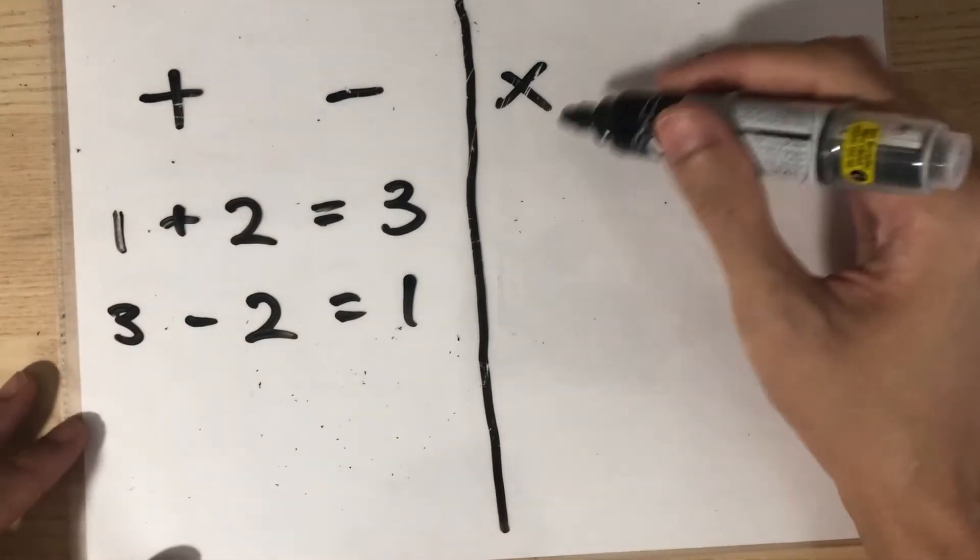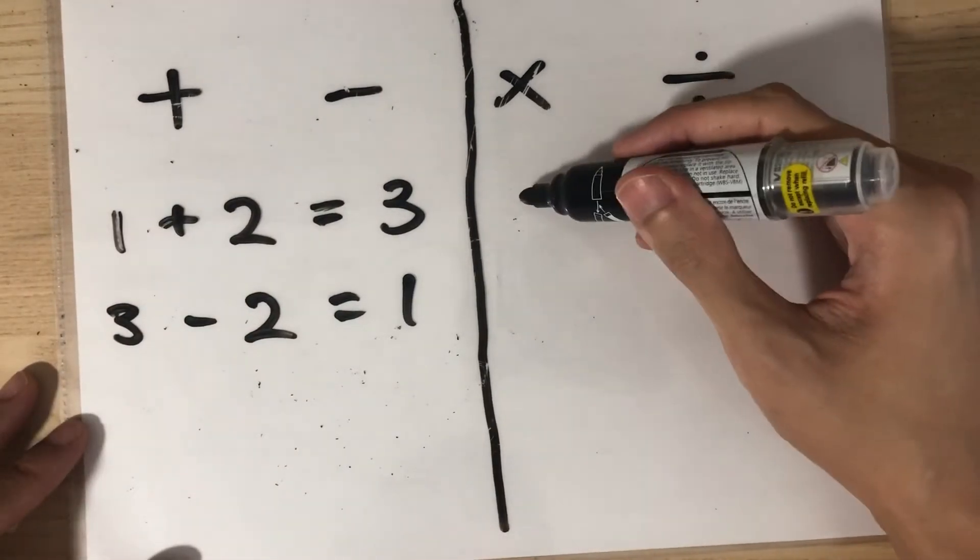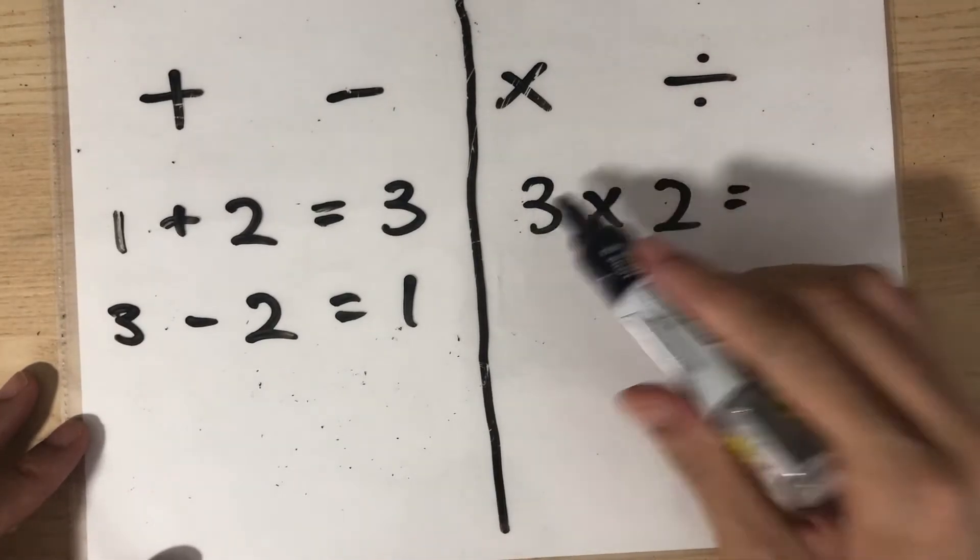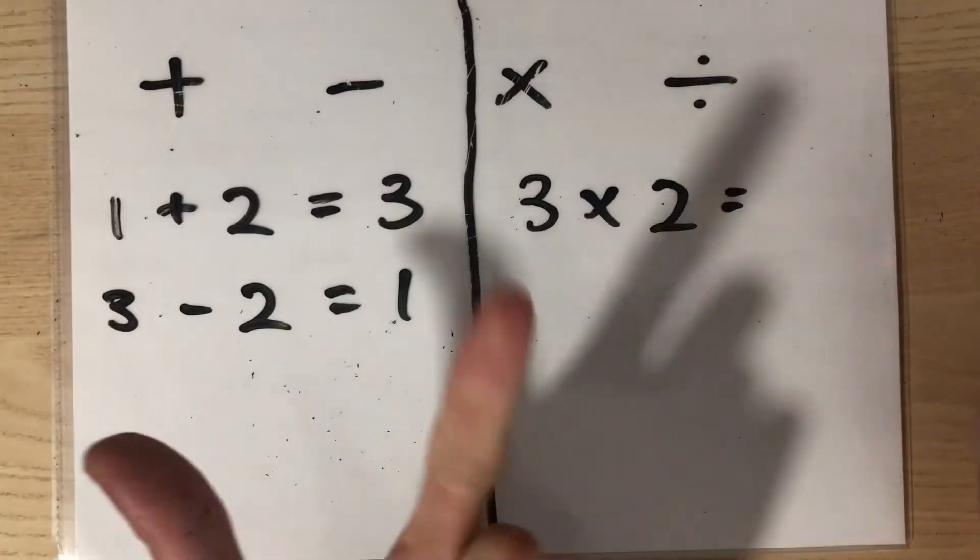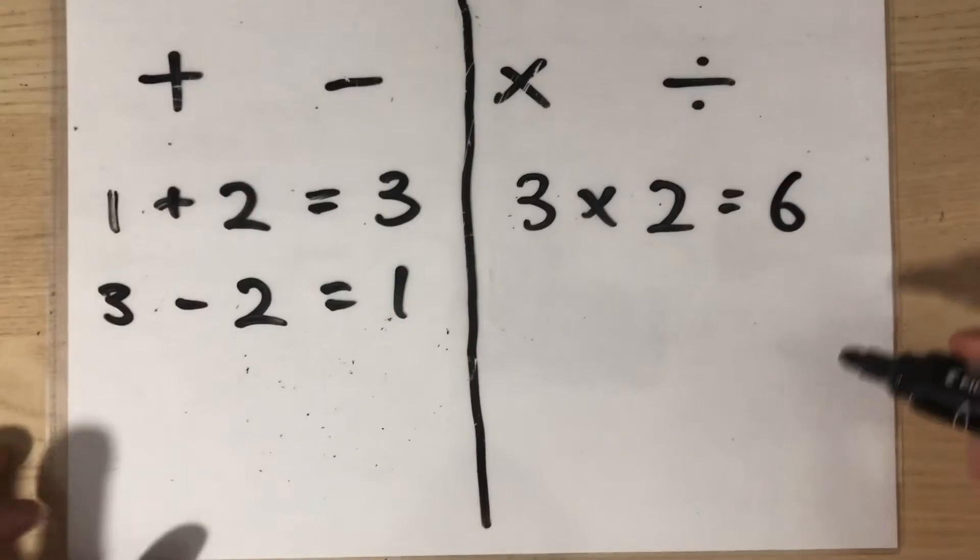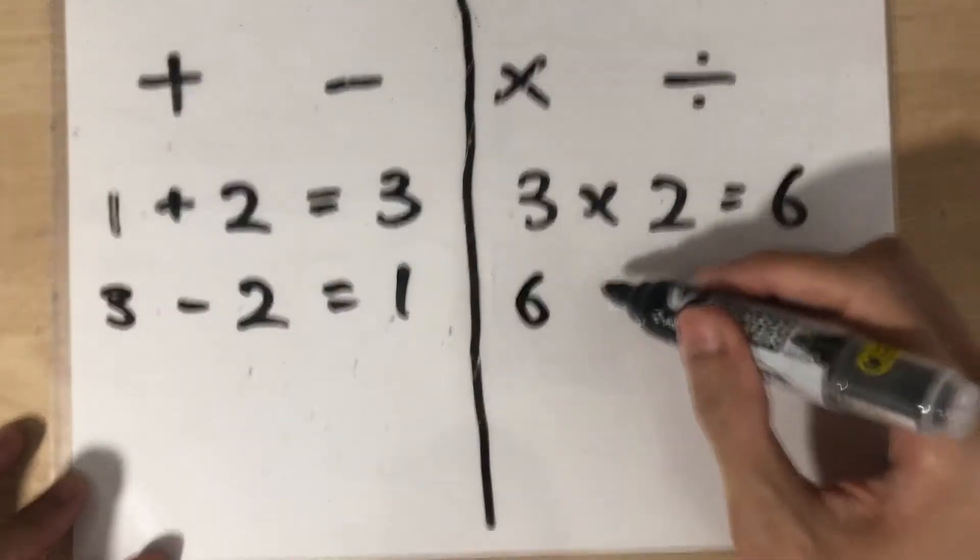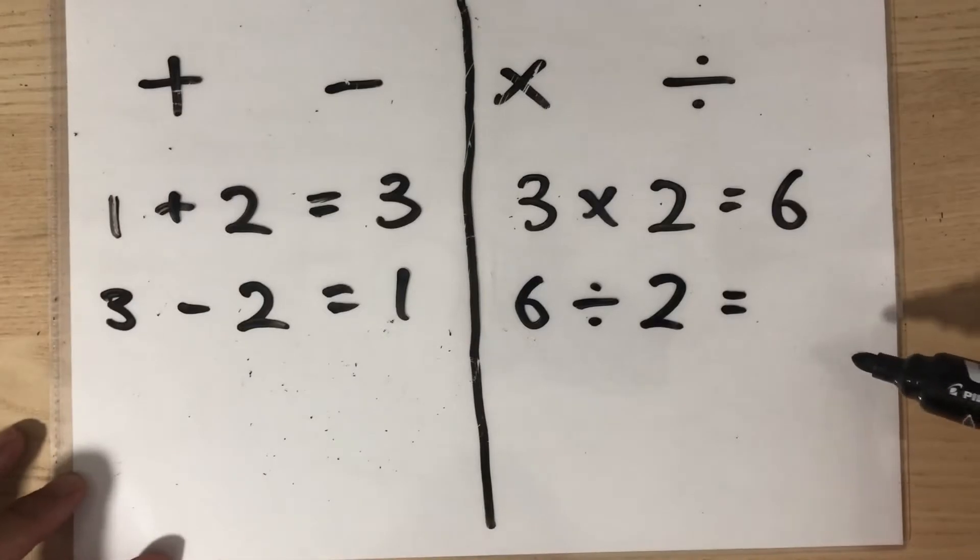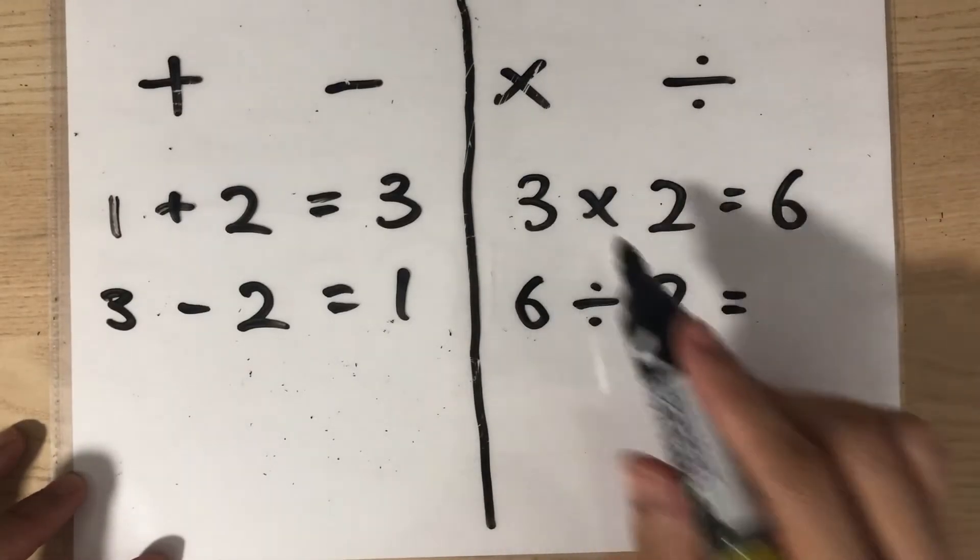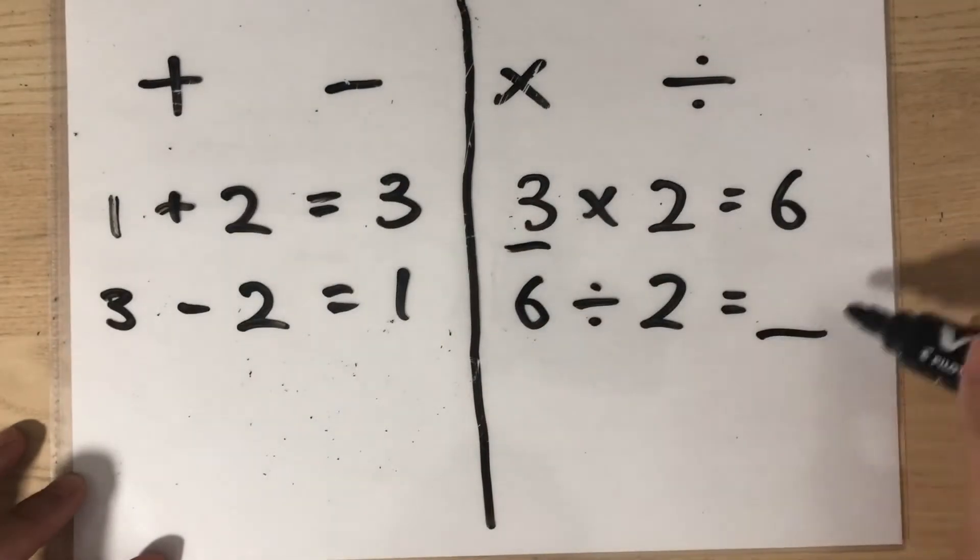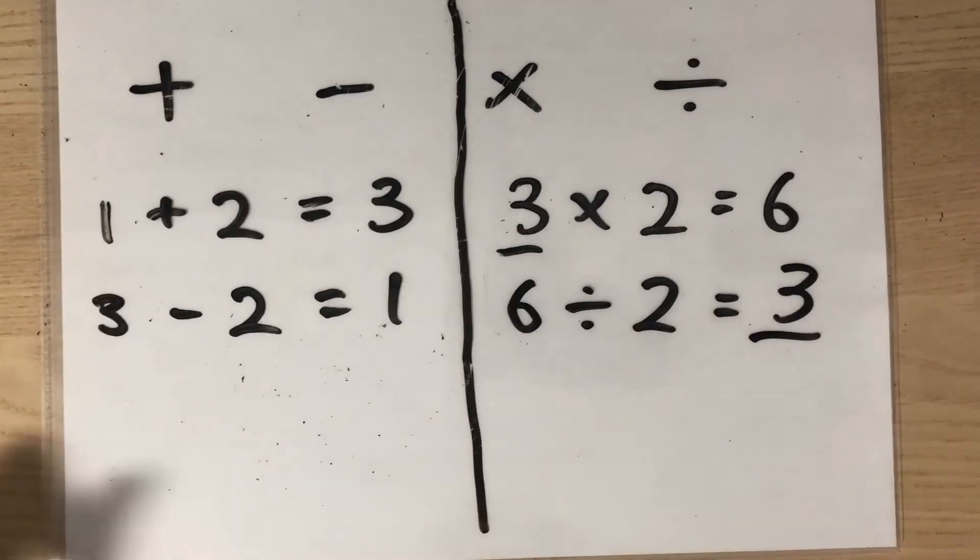The same is true for times and divide. So let's do 3 times 2 this time. What does that equal to? Three fingers on the 2 times table that will give you 2, 4, 6. So the answer is 6. Now let's flip it around. 6 divided by 2 this time. What does that equal to? Knowing that times and divide are the opposites, the answer we know is actually 3. But how do we get 3? I'll show you in the next section.